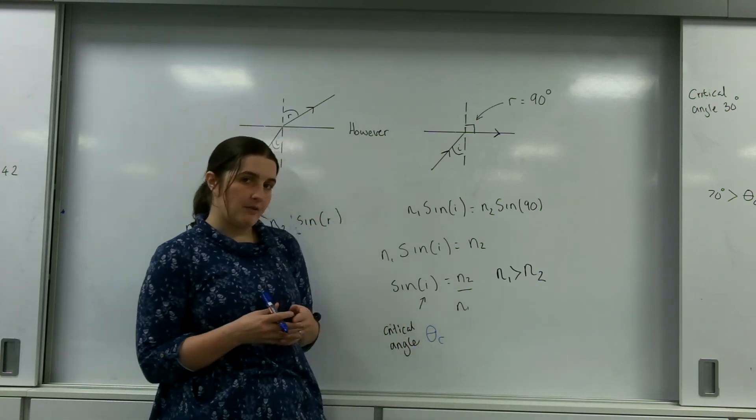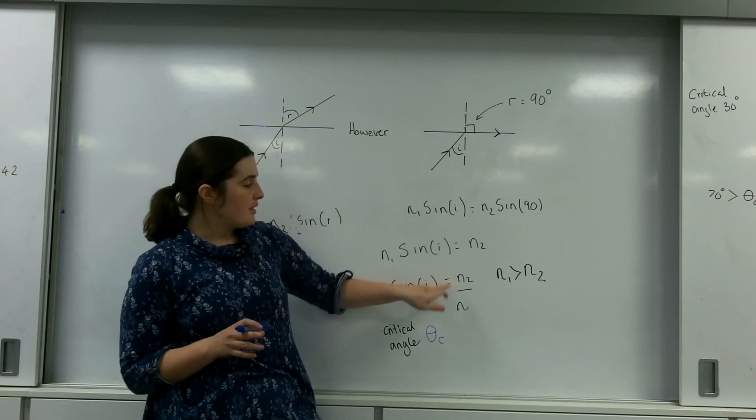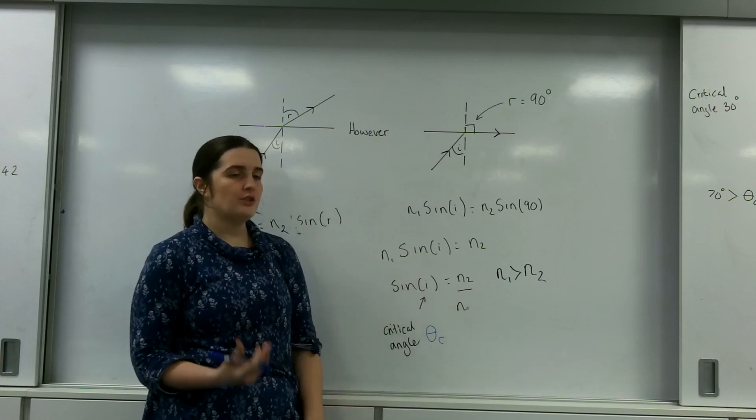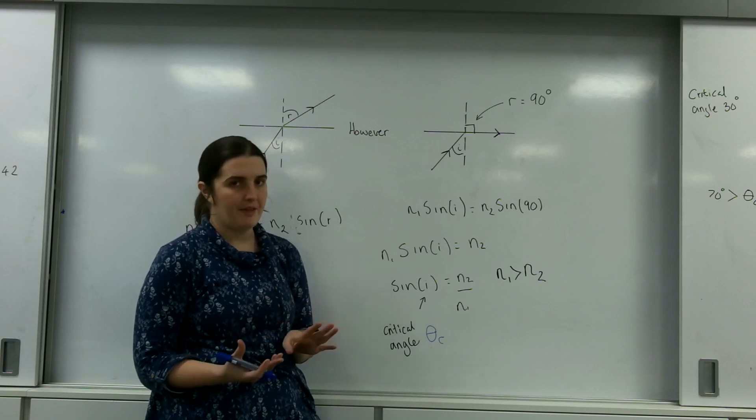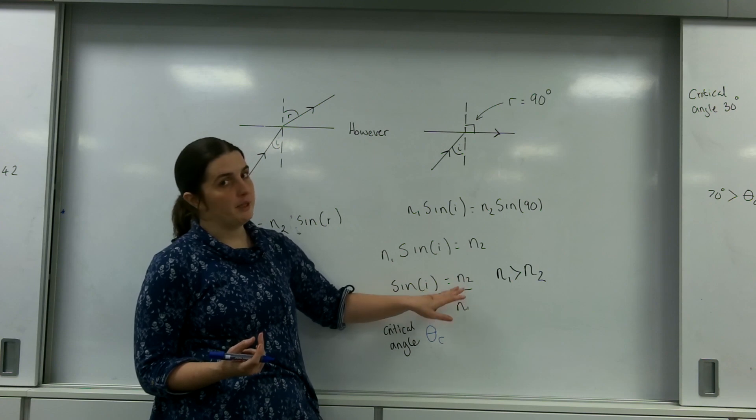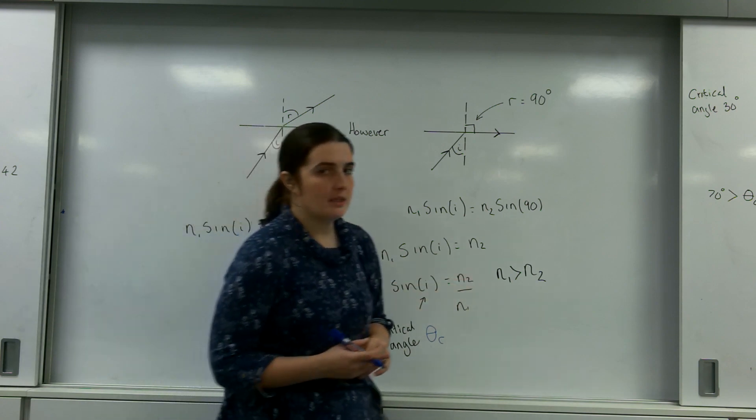Now there's a couple of things that you need to be aware of here. For this to actually work, this fraction here has to be less than 1. If you put in your calculator sine to the minus 1 of anything bigger than 1, you'll get a math error. So that implies that N1 must be bigger than N2. And this is actually on the data sheet for the AQA syllabus.